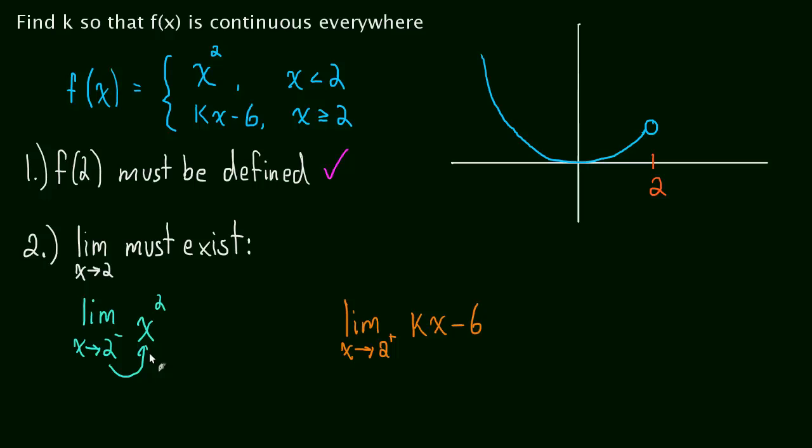Well, one thing, we can solve this limit right here. We just plug that 2 in and we know it's equal to 4. So, as long as this limit from the right-hand side is equal to 4, then the limit exists. Because the limit from the left and the right-hand side will be the same. So, now all we have to do is solve.